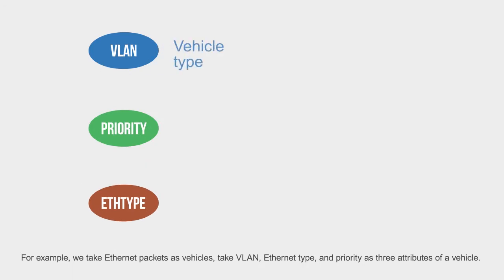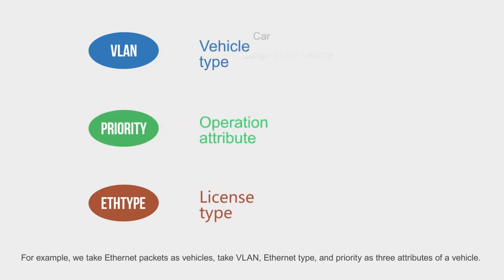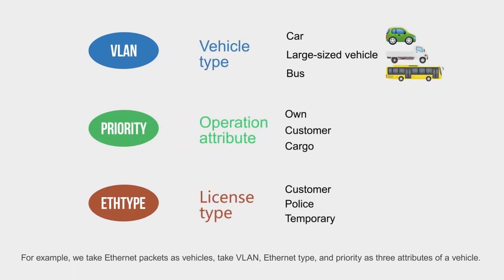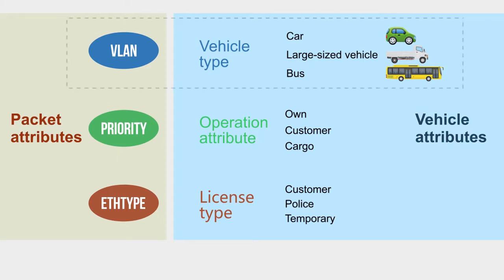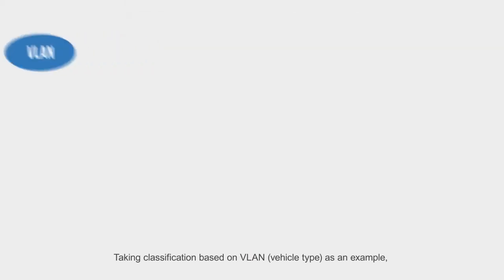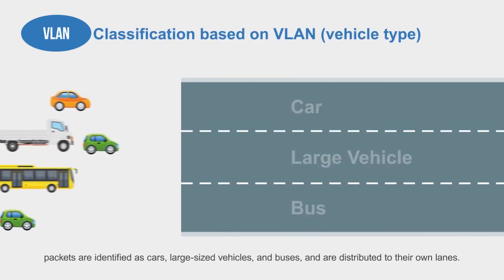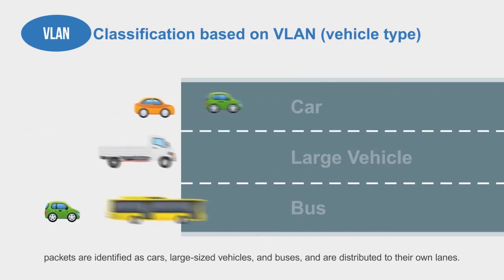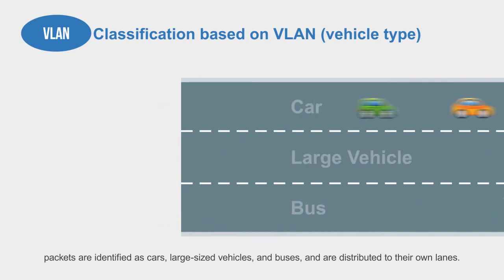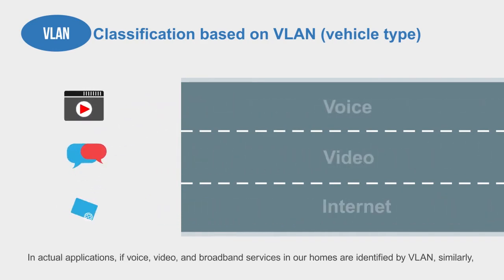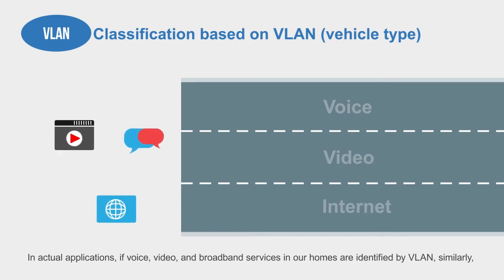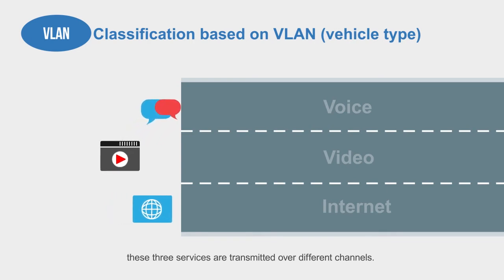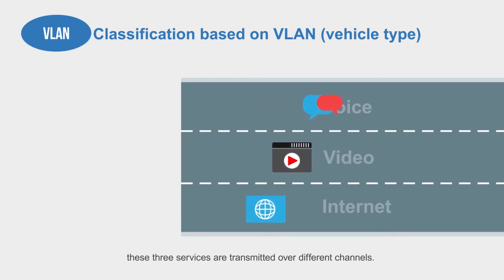For example, we take Ethernet packets as vehicles, and take VLAN, Ethernet type and Priority as three attributes of a vehicle. In this case, the classification result indicates the lane. Taking classification based on VLAN and vehicle type as an example, packets are identified as cars, large-sized vehicles and buses, and are distributed to their own lanes. In actual applications, if voice, video and broadband services in our homes are identified by VLAN, similarly, these three services are transmitted over different channels.